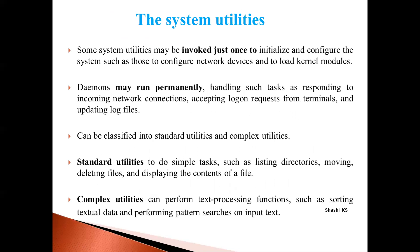System utilities can be categorized in two ways. One categorization is: system utilities invoked only once, such as those used to initialize and configure the system — for example, initializing network devices, configuring network devices, or loading and unloading kernel modules. The other category is system utilities that run permanently, which in Unix are traditionally called daemon processes. These include utilities accepting network connection requests, handling login requests from terminals, or updating log files.